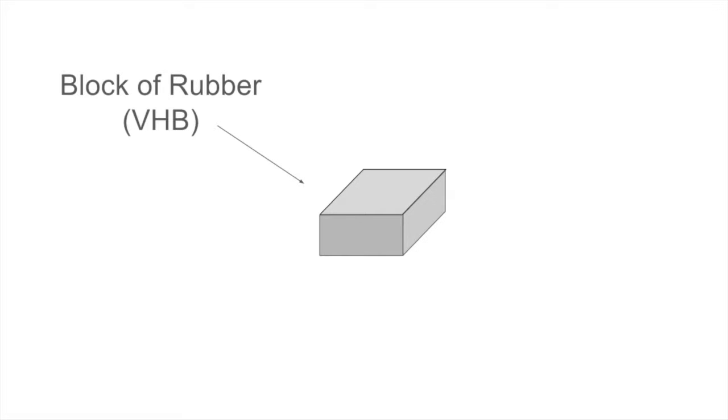So how do we apply a constant, even pressure over the top of this rubber block? Well, one way would be to attach a conductive material to the top and bottom of the block. We need to keep in mind that this material needs to be flexible, so that when the block expands, the conductor expands as well.